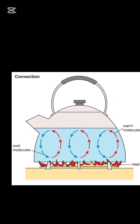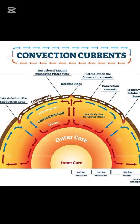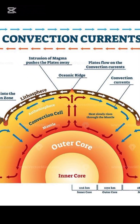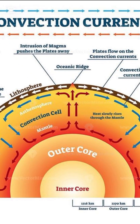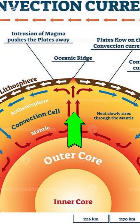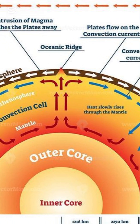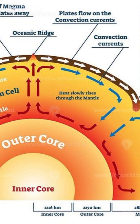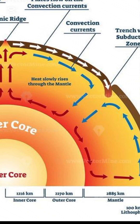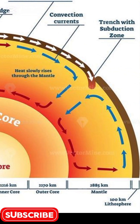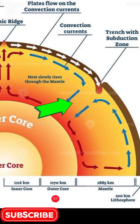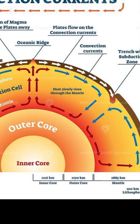This process also occurs on a larger scale, where the earth's convection currents in the mantle drive the movements of the tectonic plates. Heat from the earth's core rises, causing the mantle to expand and move upward. As it cools, it sinks back down, forming a circular flow.